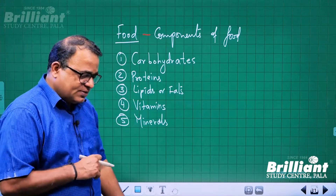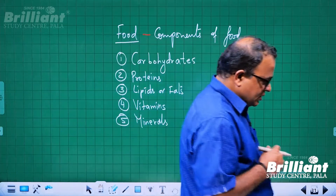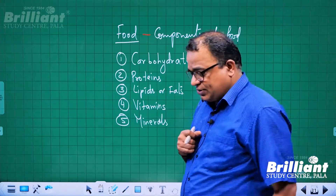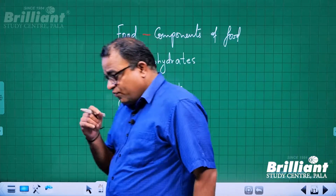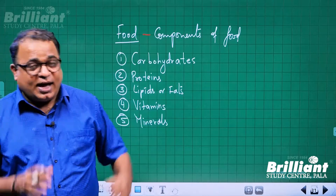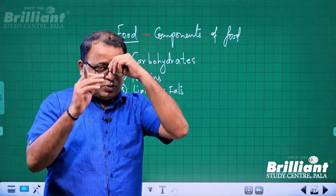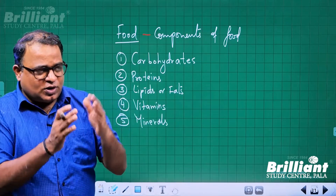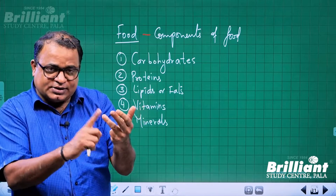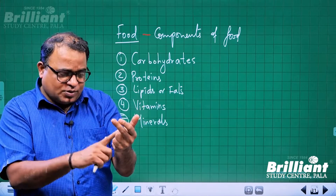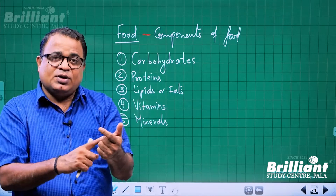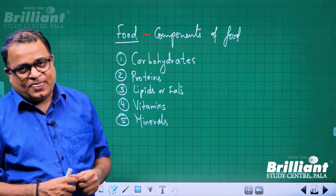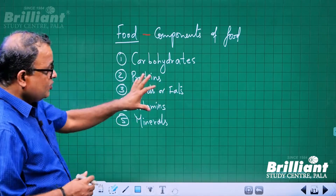Carbohydrates, proteins, fats or lipids, vitamins and minerals — these are the components of food. What are the components of food? Carbohydrates, proteins, lipids, vitamins and minerals. So this component you should never forget.